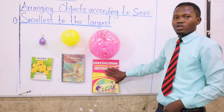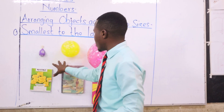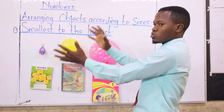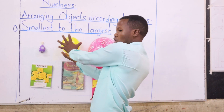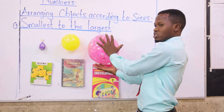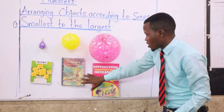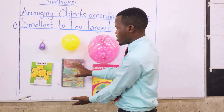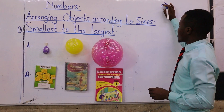Now also in the exam they can tell you to arrange according to the largest going to the smallest — it's the opposite of what we have here. If you look at the red balloon, it's the largest, followed by the yellow balloon, and then the smallest is the purple balloon. For the books from largest to smallest: the distinction first, followed by the textbook, and then the exercise book.